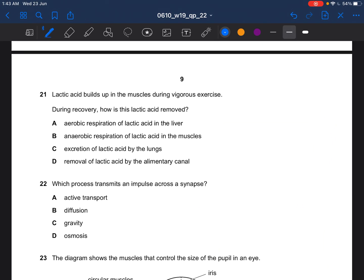Lactic acid builds up in the muscles during vigorous exercise. During recovery, how is this lactic acid removed? Lactic acid would be removed by aerobic respiration. The answer would be A, aerobic respiration of lactic acid in the liver.